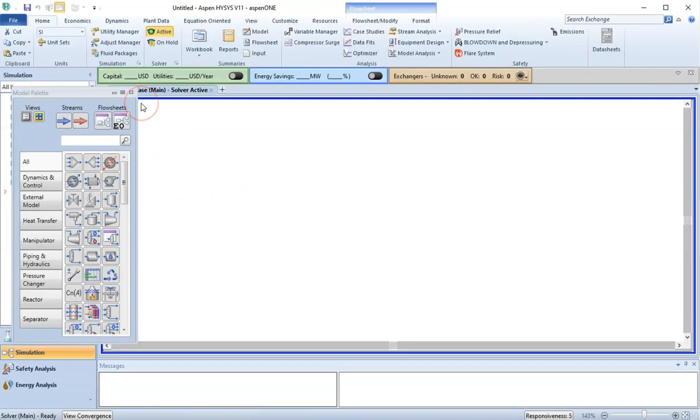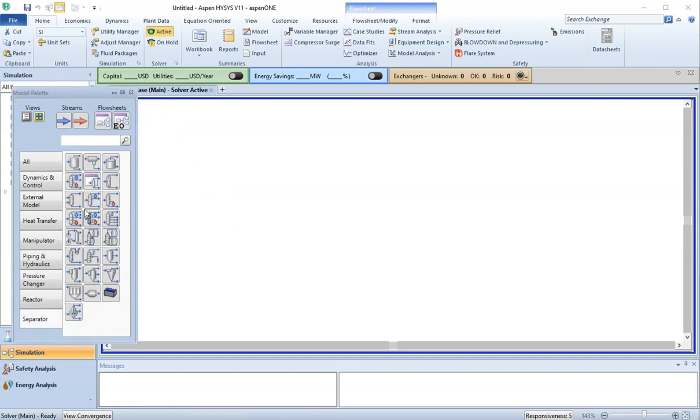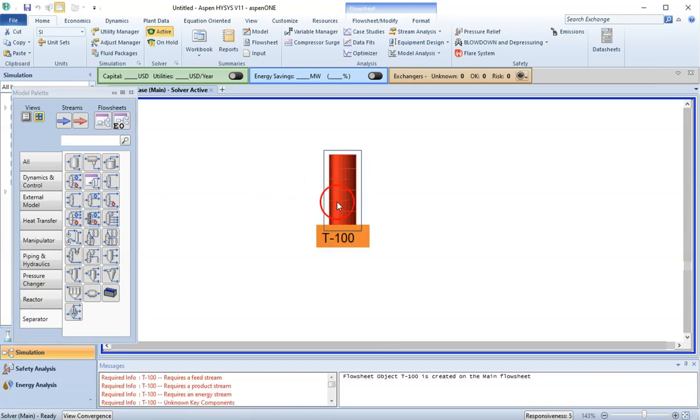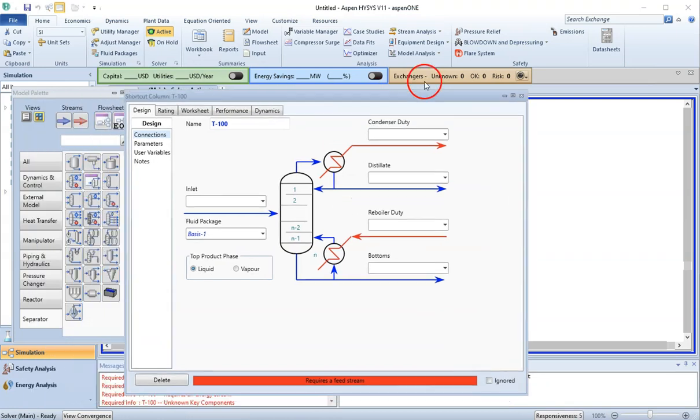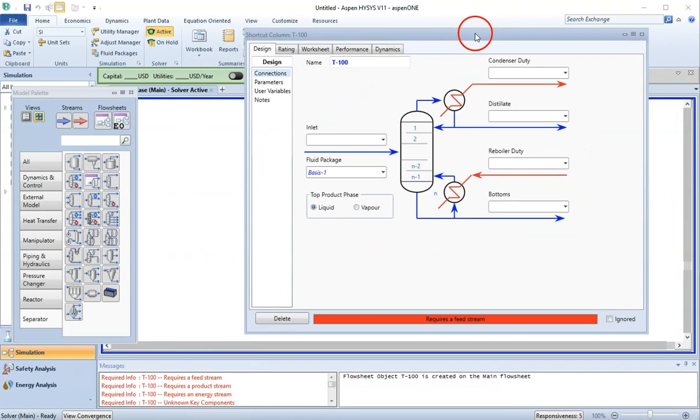Particularly for the number of plates, we will be using shortcut column. In the shortcut column, if you come to separators, this is where you can find the shortcut column. Just click that and bring that into your solver. Now we double click this and we provide some connections here.